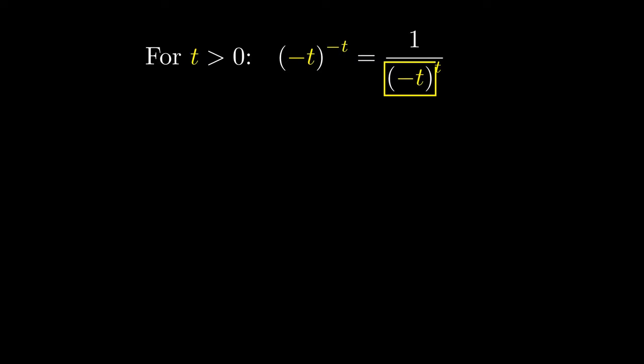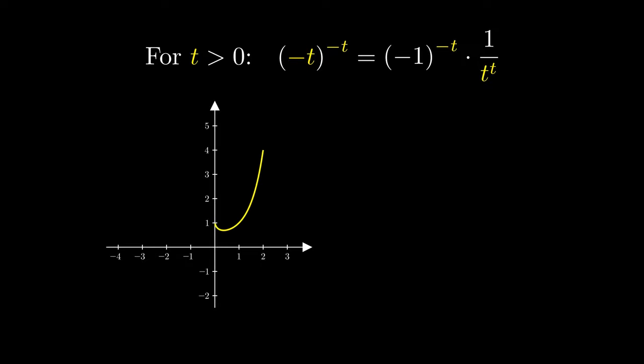But the negative of t can be thought of as negative 1 times t. And we can split up this expression using the laws of indices by bringing the t into the powers of both negative 1 and t. Pulling out the negative 1 expression, we get negative 1 to the negative t times 1 divided by t to the t. So let's summarize our result and check that what we did really makes sense.